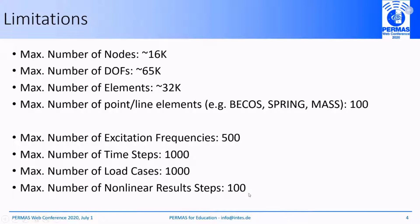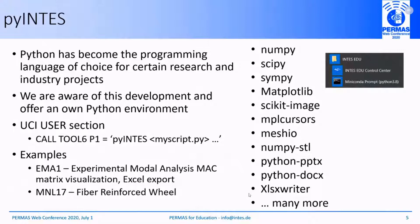Python has become the programming language of choice for certain research and industry projects. We are aware of this development and offer our own Python environment. You can use this Python interpreter directly in your UCI inside the user section by using tool 6, where you can launch our Python interpreter with a Python script. You will find some examples illustrating the use of our Python interpreter — for example EMA1, an experimental modal analysis to compute the model assurance criterion, the MAC matrix. An Excel export is also included in the Python script.